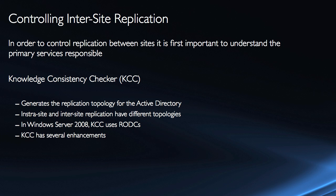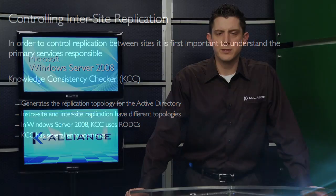The first is the KCC, or the Knowledge Consistency Checker. The KCC is responsible for generating the topology for the Active Directory forest. Intra-site and inter-site replications will have different topologies, so inside the site it will be a little different. In Windows Server 2008, the KCC will also utilize RODCs and it has several enhancements in the algorithms, the number of connection objects, number of sites supported, and how efficiently it operates. So the KCC is responsible for automatically generating that topology.